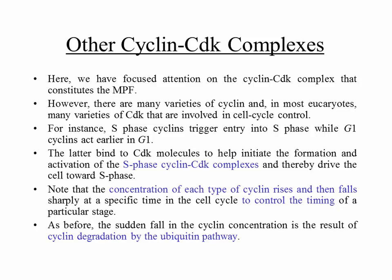G1 cyclins act earlier in G1. G1 is the gap between M phase and S phase — the first gap that allows the cell enough time to grow. G1 cyclins bind to the cyclin-dependent kinase molecules to help initiate the formation and activation of the S phase cyclin-CDK complexes, thereby driving the cell towards S phase. It's basically a timing mechanism — individual timers, and once one gets done, the next one starts.